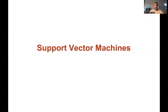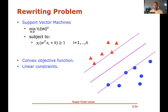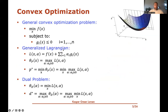Hi and welcome back to these videos on support vector machines. In the previous video we introduced a whole lot of general techniques for solving convex optimization problems, and in this video we'll go into detail on how to apply those techniques to the support vector machine problem. Two videos ago we rewrote the SVM optimization problem into a form where we minimize over w and b of half squared norm of w, subject to constraints saying that the label y_i times the inner product between w and x_i plus b is at least one for all n training examples. This is a convex objective function with linear constraints.